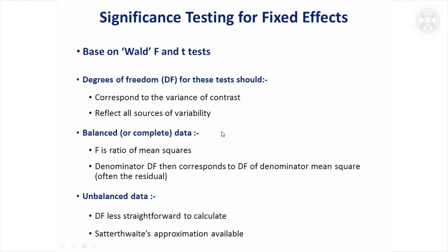Another practical point is that significance tests are a bit different in mixed models. They're based on Wald F and T tests. Some more basic packages will do Wald chi-squared tests, but these are making assumptions and approximations. It's better, if you can, to do F or T tests — they're very similar to the F or T tests you would get from an analysis of variance or a regression.